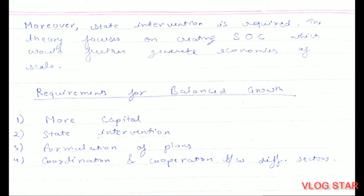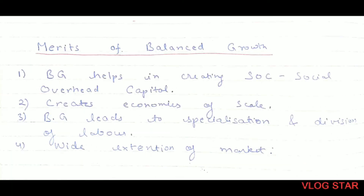The requirements of balanced growth are: first, more capital — we need substantial investment in different sectors, which requires adequate capital. Second, state intervention — proper planning regarding how much investment is to be done in which sector, implemented accordingly. Third, coordination and cooperation between the different sectors in which we are investing.